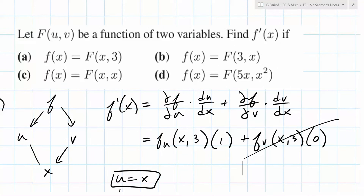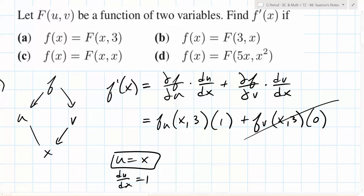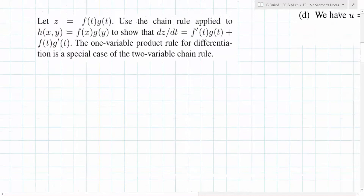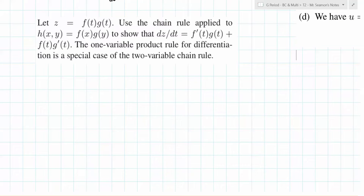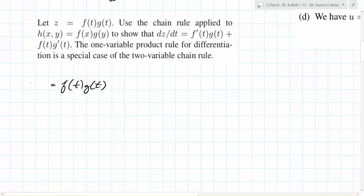So then what's the final answer? F_U at X3. Now, it tells us that Z equals F of T times G of T, so that's Z just written in terms of T — you could write that as Z of T.